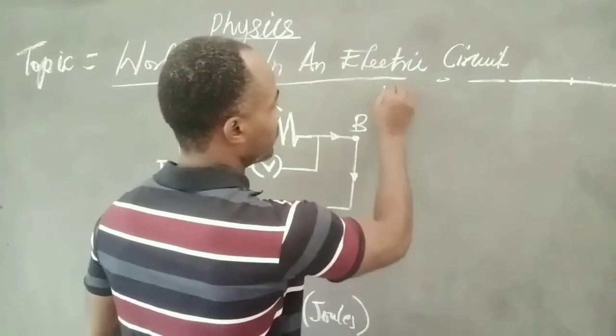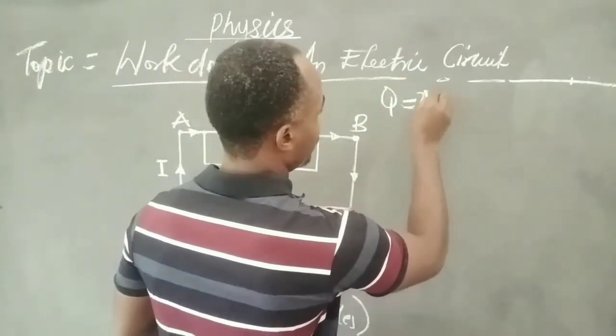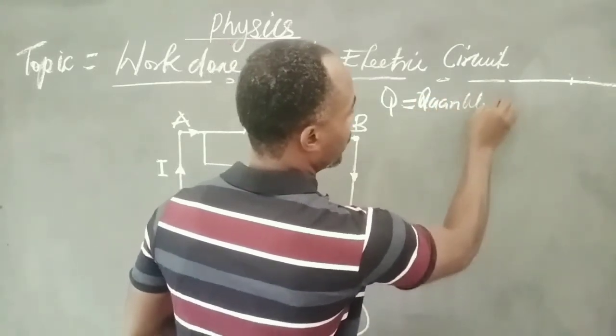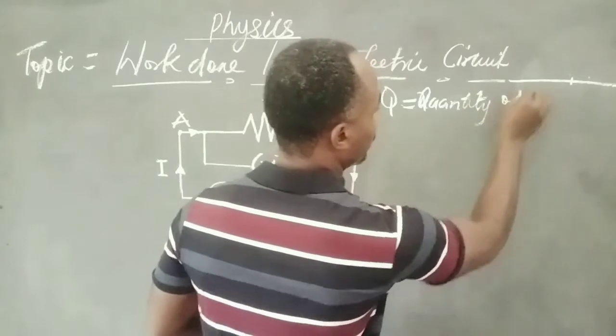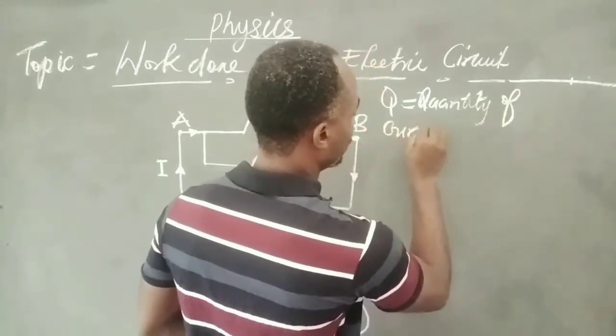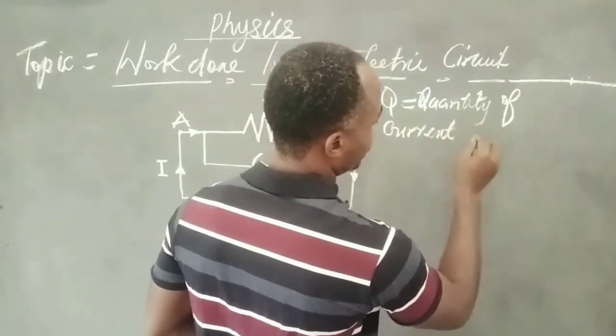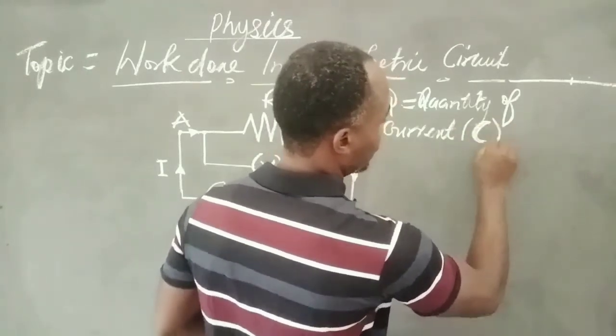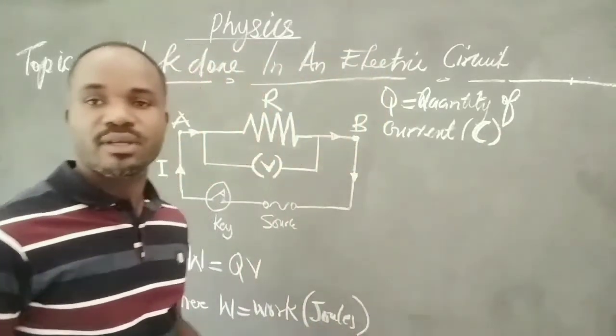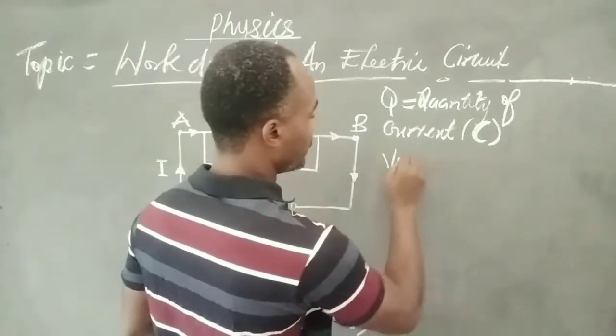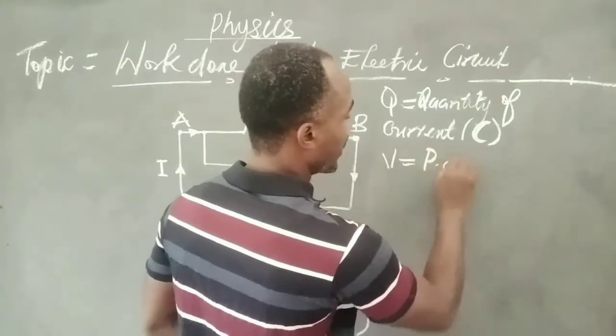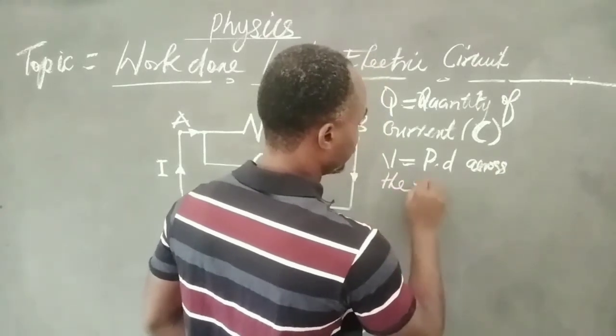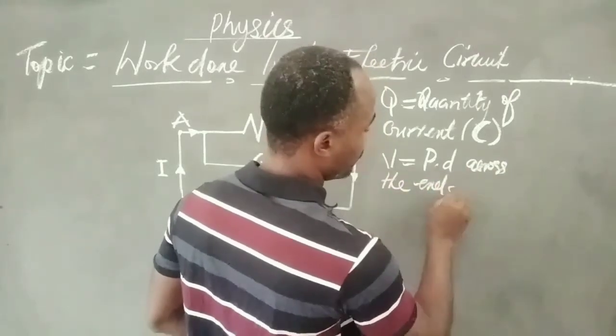Q is a quantity of electric current, quantity of current flowing, measured in coulombs. Then V stands for PD across the terminals, across the ends, measured in volts.